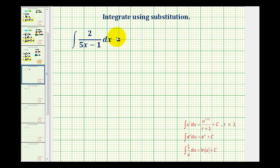So it may be helpful if we factor out this 2. We write this as 2 times the integral of 1 divided by the quantity 5x minus 1 dx.